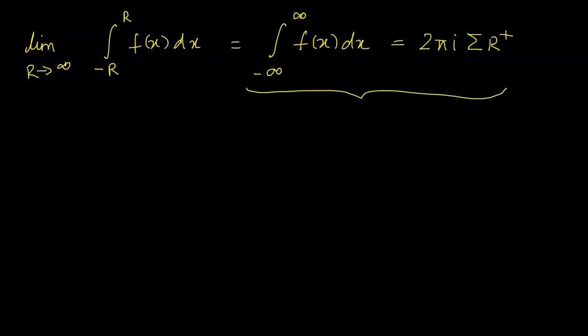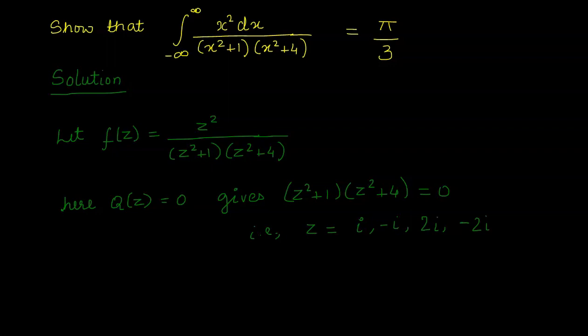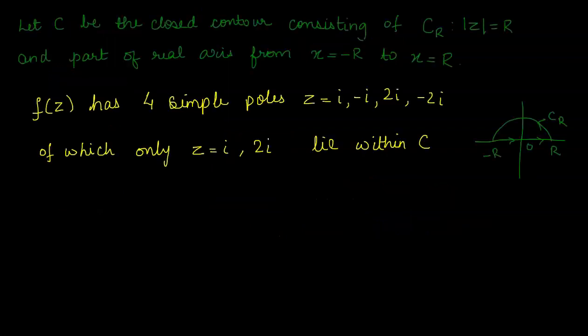To find the residues, we have the poles. What are our poles? The poles we found are z equal to i, minus i, 2i, and minus 2i. These are the four roots of our equation. So fz has four simple poles: z equal to i, minus i, 2i, and minus 2i. Of these, only z equal to plus i and z equal to plus 2i lie within the closed contour c in the upper half plane. The negative poles lie below the real axis, so we will not consider them.